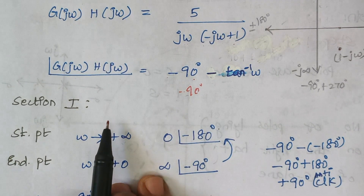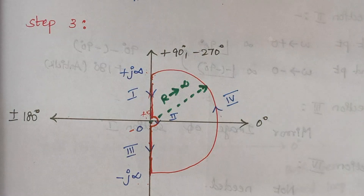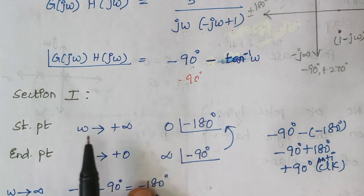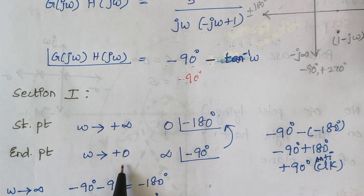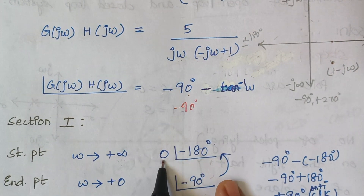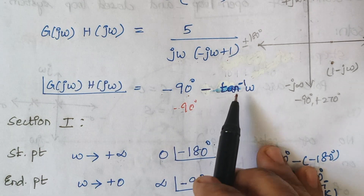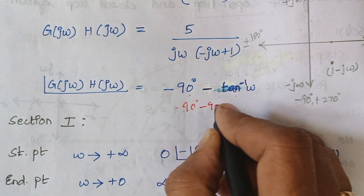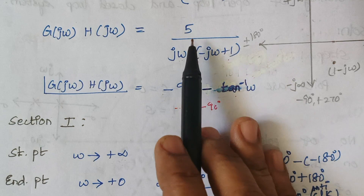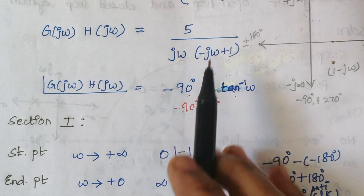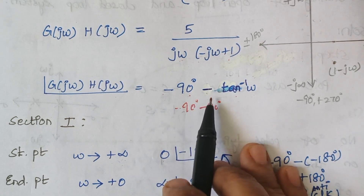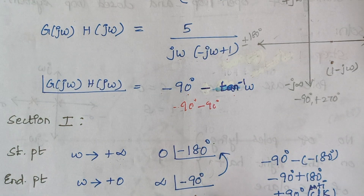For section 1 analysis: it starts at plus infinity and ends at plus 0. When omega equals plus infinity, anything divided by infinity is 0 for the magnitude, and the phase is minus 90 minus 90 = minus 180 degrees. When omega equals plus 0, the magnitude is infinity, and the phase is minus 90 minus 0 = minus 90 degrees.